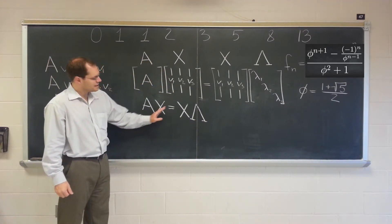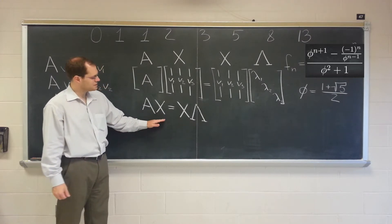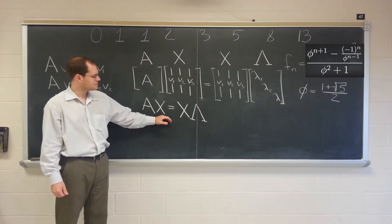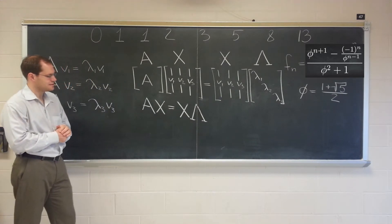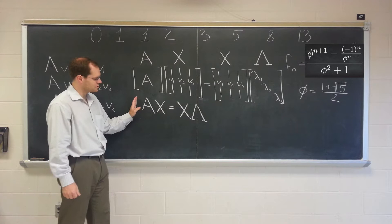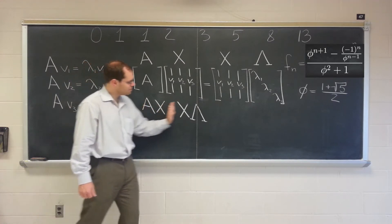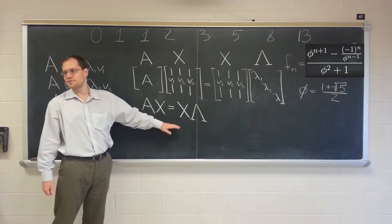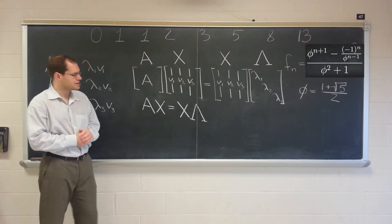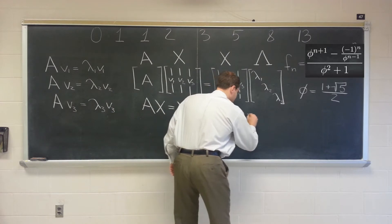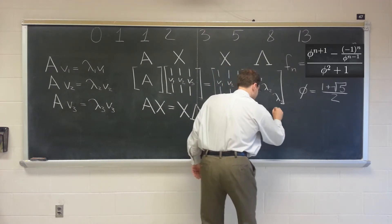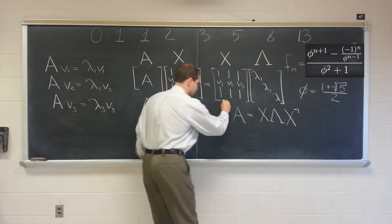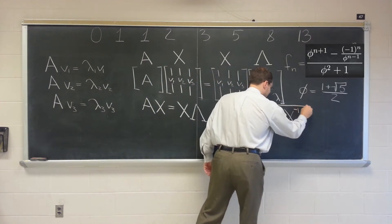So let's write down the identity that we have. We have AX equals X lambda. And of course, this is not the sort of identity where X can be canceled because the way you cancel matrices in linear algebra is by multiplying by the inverse. But because the order of the matrices matters, you have to multiply by the inverse consistently on the consistent side. So because we want the decomposition of A, we'll multiply both sides of this identity by X inverse on the right. And we'll end up with A equals X lambda X inverse.